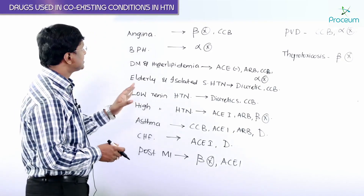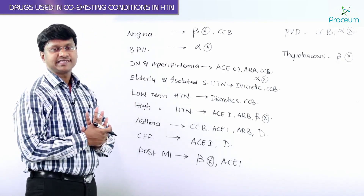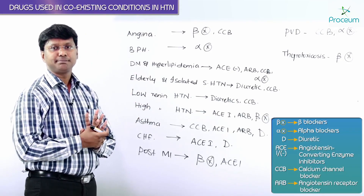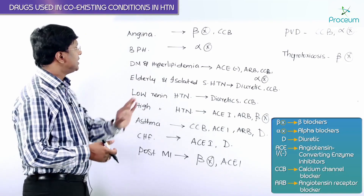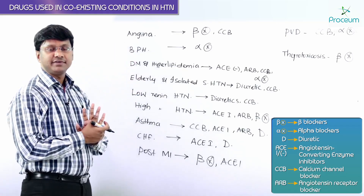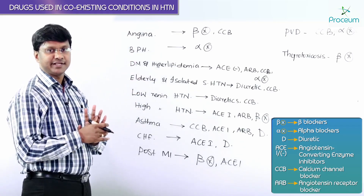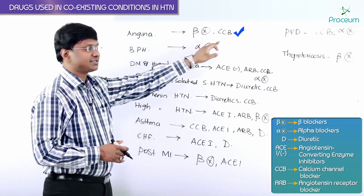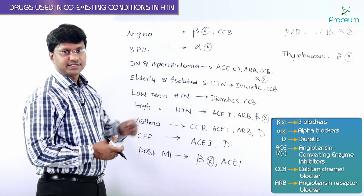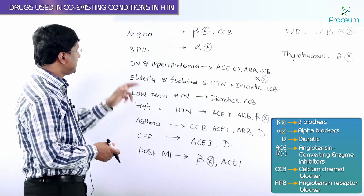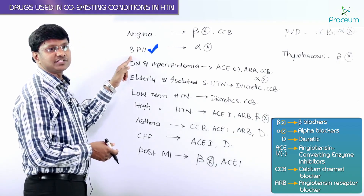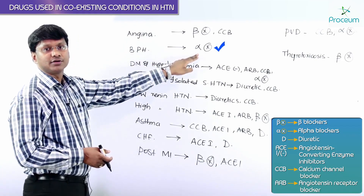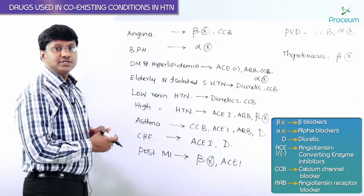Let me discuss some of the coexisting conditions along with hypertension and the preferred drugs. If the individual is having angina and hypertension, the preferred drugs are beta blockers and calcium channel blockers. If the individual is having hypertension and benign prostatic hyperplasia, the preferred drug is alpha blockers.